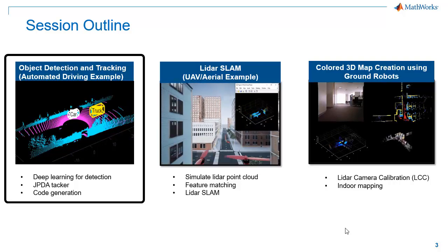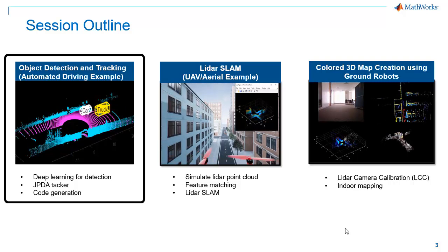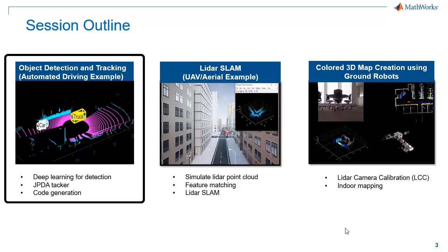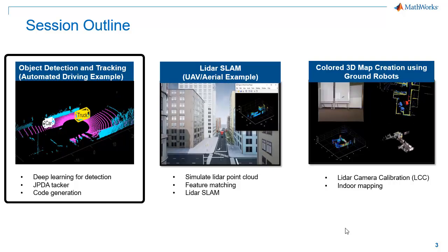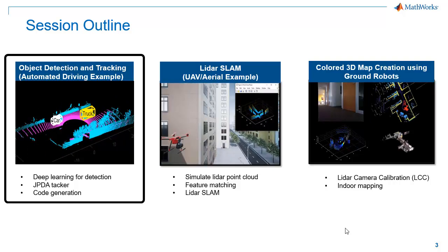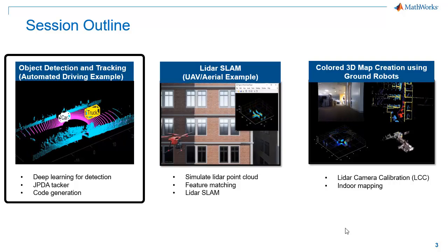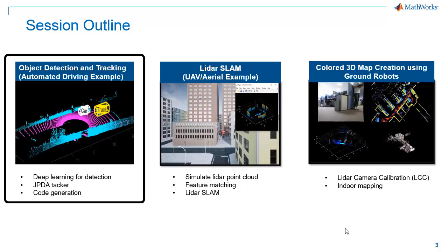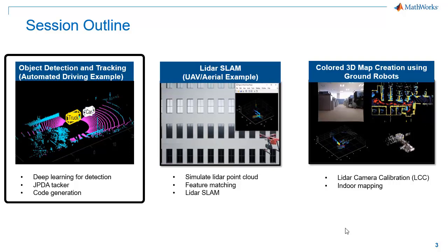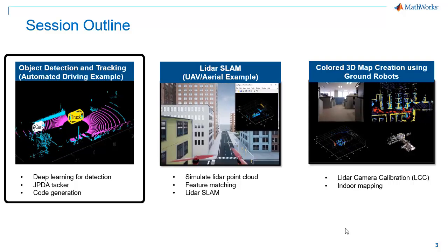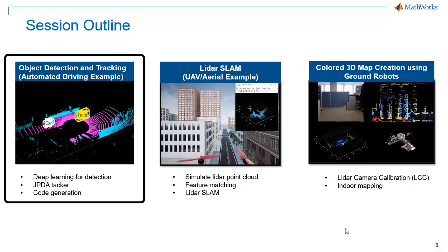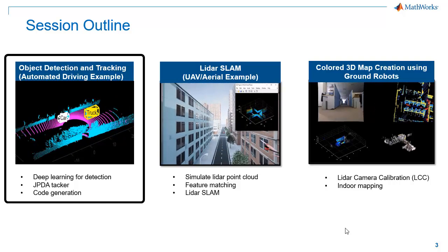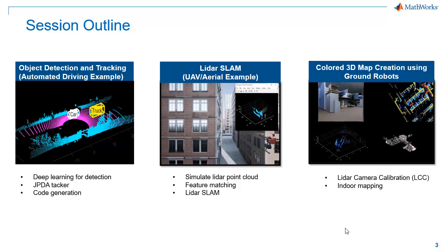The first example is Object Tracking for Automated Driving Applications. This uses real-world data to track cars and trucks from an entire point cloud sequence collected from an ego vehicle. We will see how to use a deep learning-based approach for object tracking and then we will track our objects using a JPDA tracker. As a final step, we will generate C code for this algorithm that can be deployed into production.